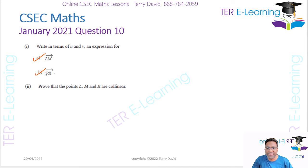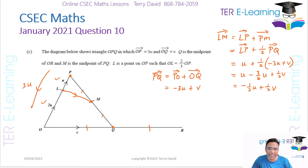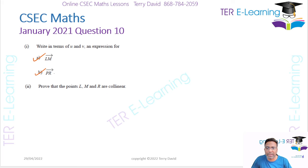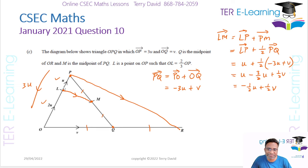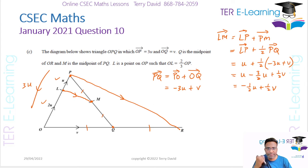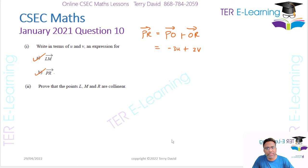Next, find vector PR. Going back to the diagram, PR = PO + OR = -3u + 2v. Since Q is the midpoint of OR and OQ=v, then OR=2v. So PR = -3u + 2v. That one is straightforward.